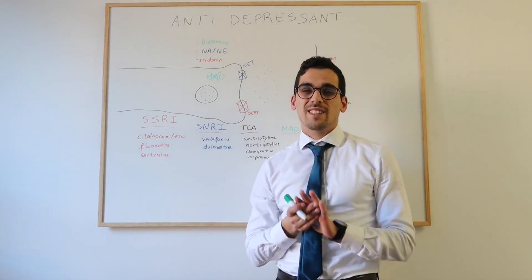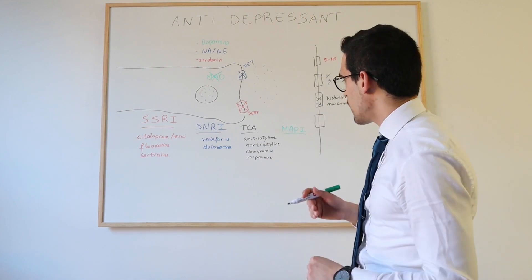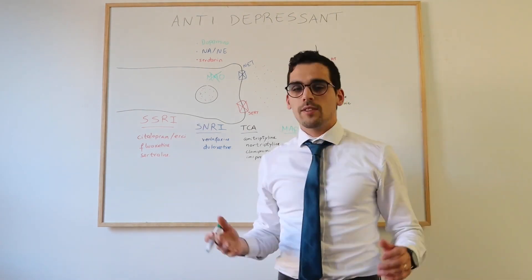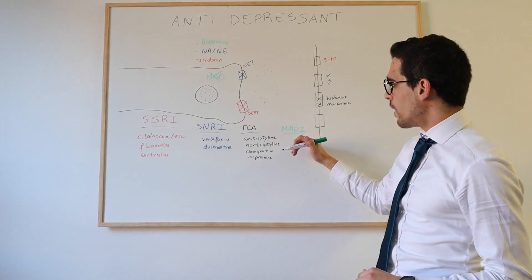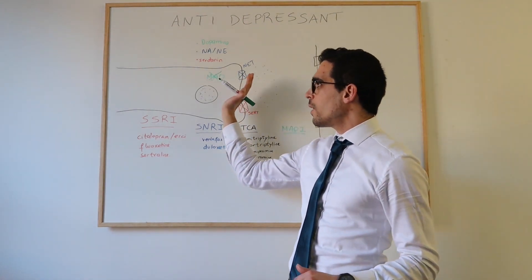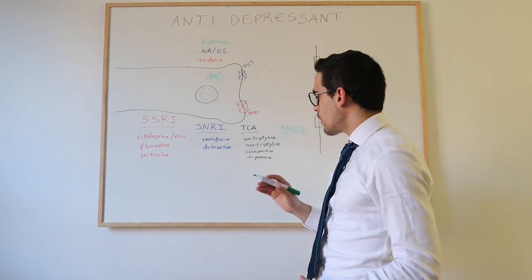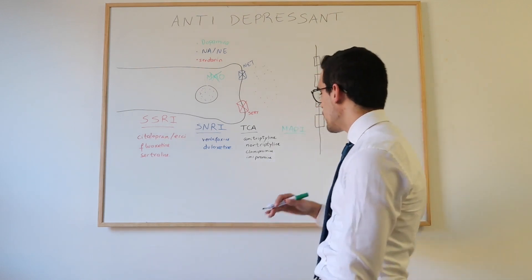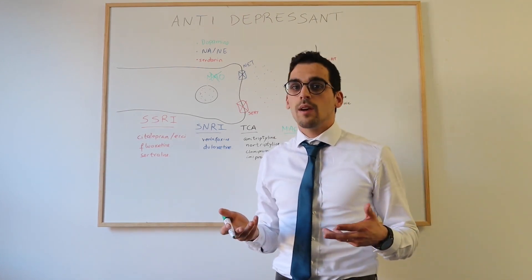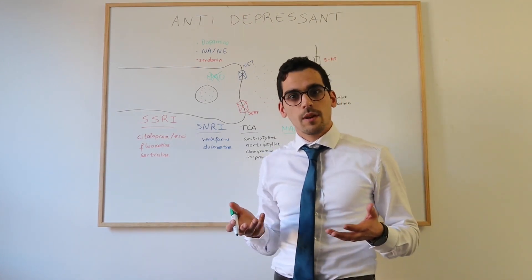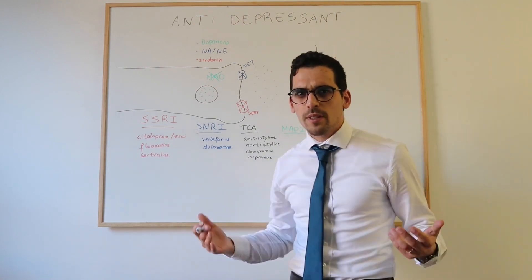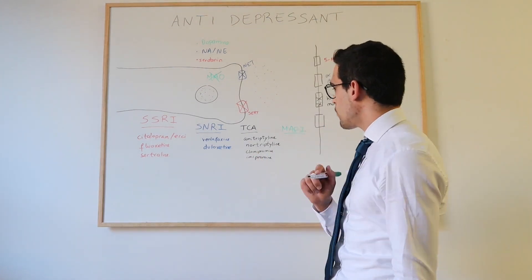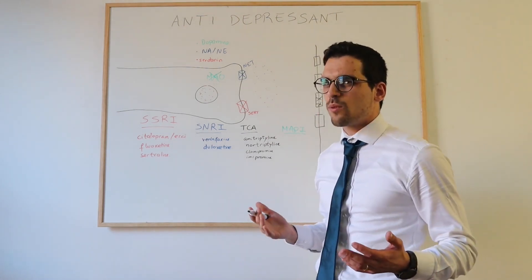Unfortunately, MAOIs have really strong side effects, especially with certain foods. Monoamine oxidase is found not just in the brain but also in the gut and liver, where it helps digest tyramine from food. If it's inhibited, tyramine accumulates in the body and can trigger a hypertensive crisis or even a stroke. This is why MAOIs are rarely used and considered a last resort.